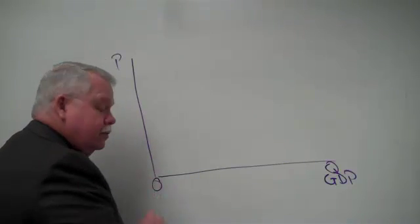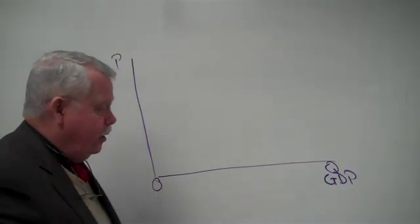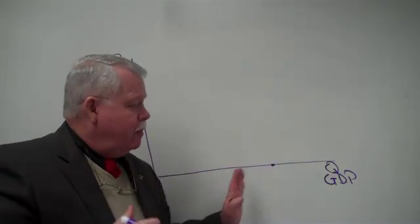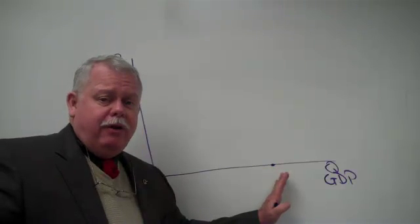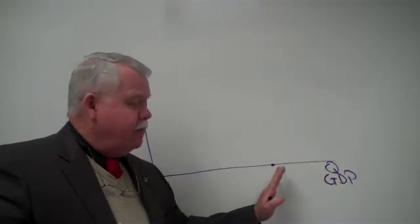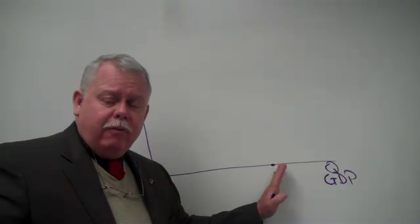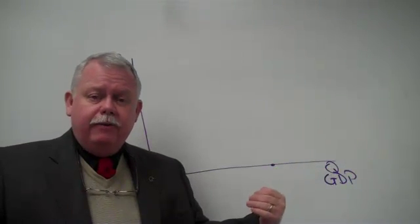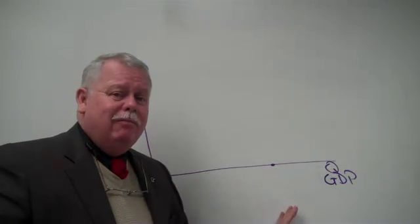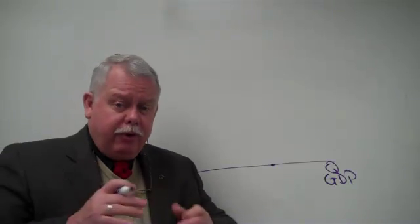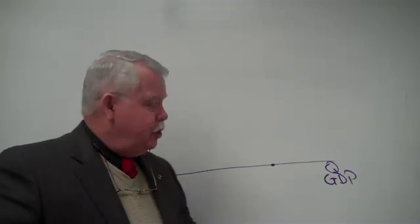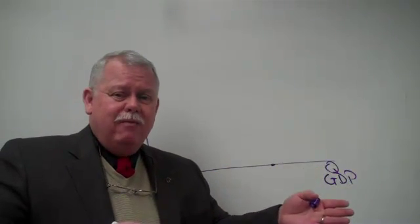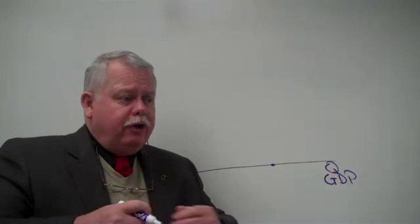So at some point out here, we would reach a maximum amount of GDP that the economy could produce, a maximum output level. And at that maximum output level, if you were on a production possibilities curve, you'd be on the curve, not inside of it. You would be fully employing all of your resources. And in particular, we think about labor. So at this maximum level of output, we would have employed all of our labor in the economy to the extent reasonable.